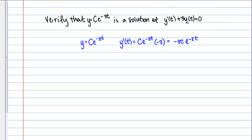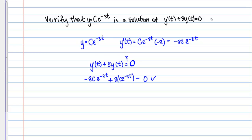The other part of the differential equation is just y of t, which is the original function. Plugging in: y prime of t is negative 3ce to the negative 3t, plus 3 times y of t, which is 3 times ce to the negative 3t. I can see right away that those cancel and equal 0. So my conclusion is that y equals ce to the negative 3t is a solution of y prime of t plus 3y of t equals 0.